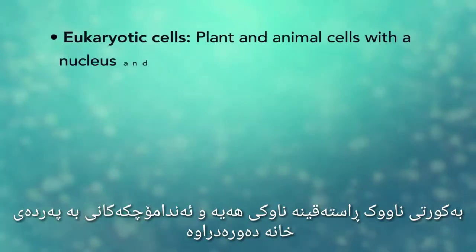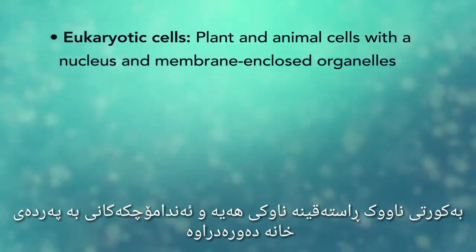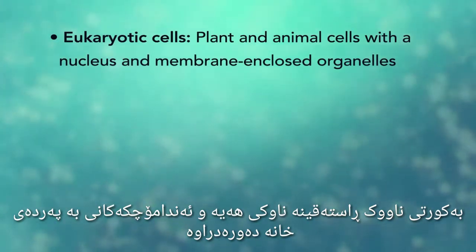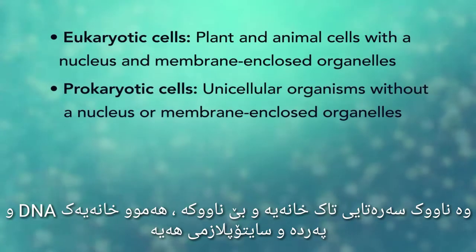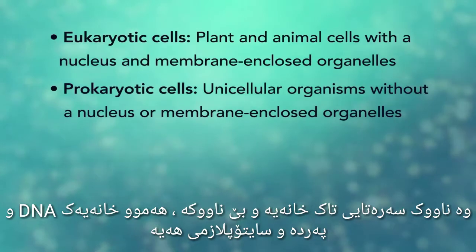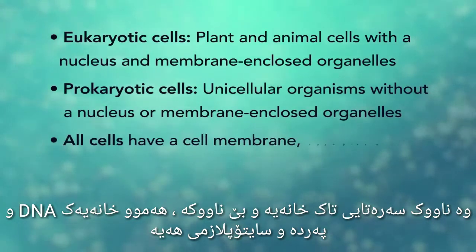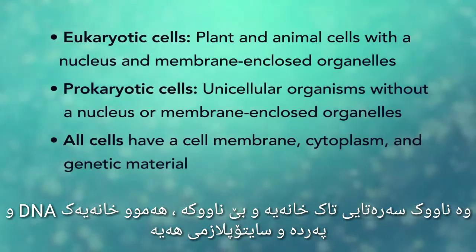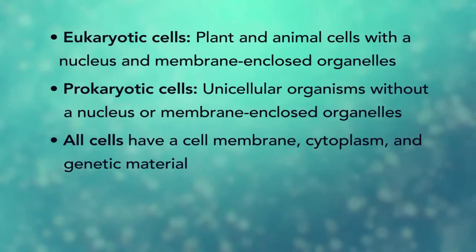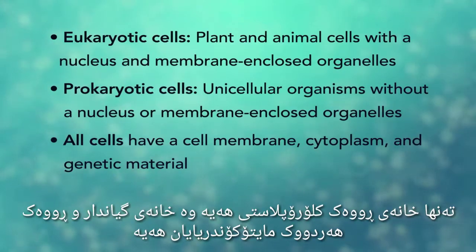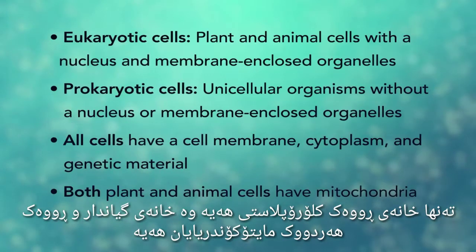In summary, eukaryotic cells are plant and animal cells with a nucleus and membrane-enclosed organelles, while prokaryotic cells are unicellular organisms without these things. All cells have a cell membrane, cytoplasm, and genetic material. And even though only plant cells have chloroplasts, both plant and animal cells have mitochondria.